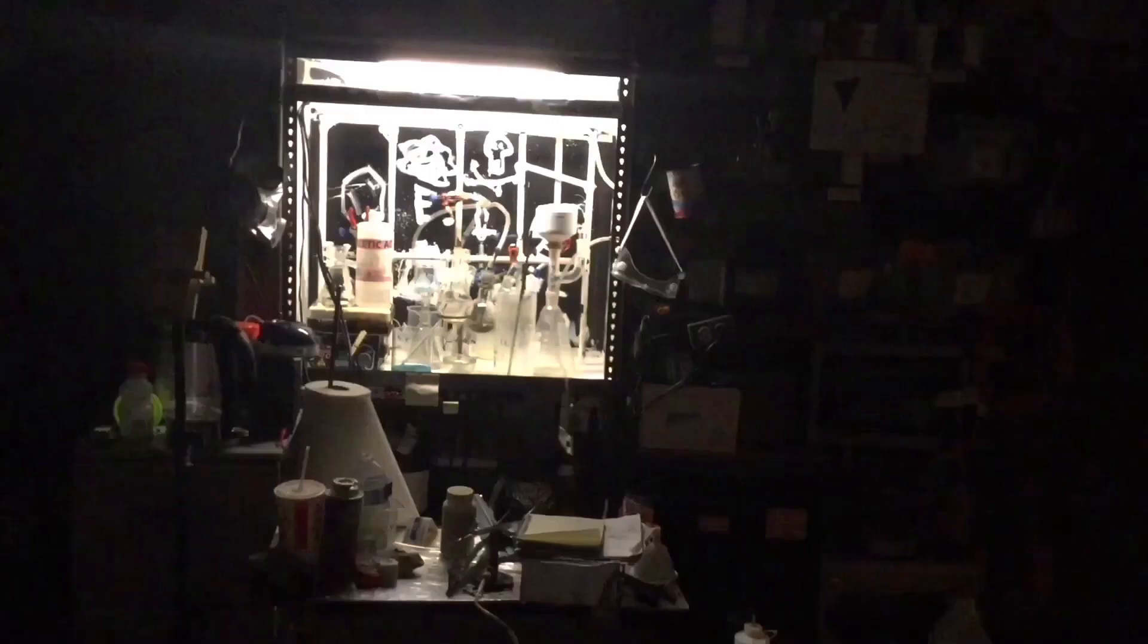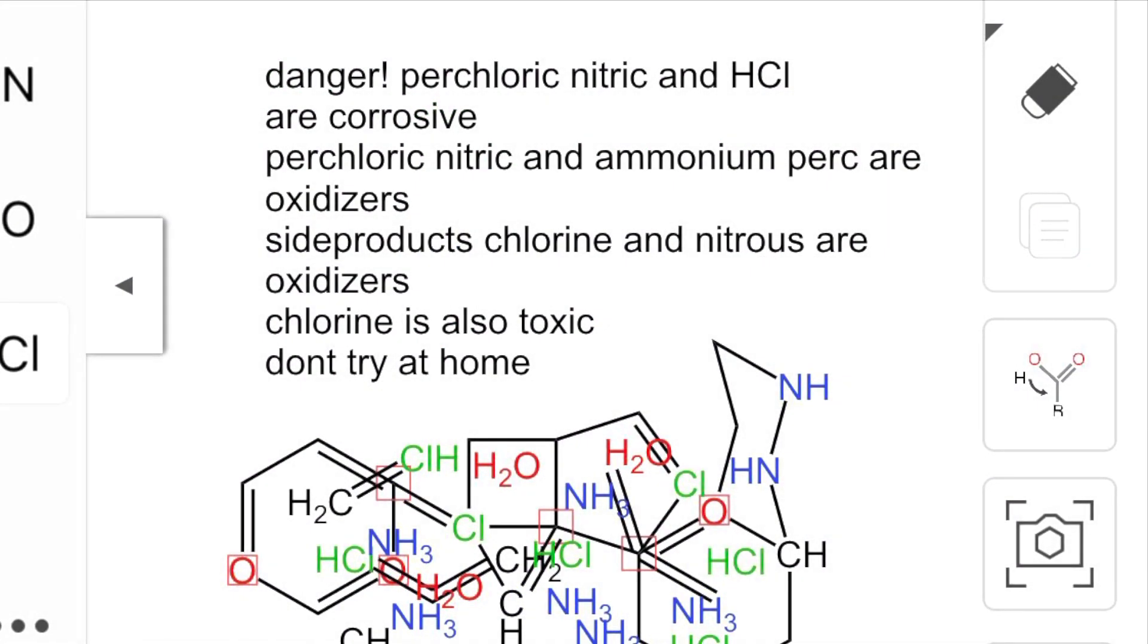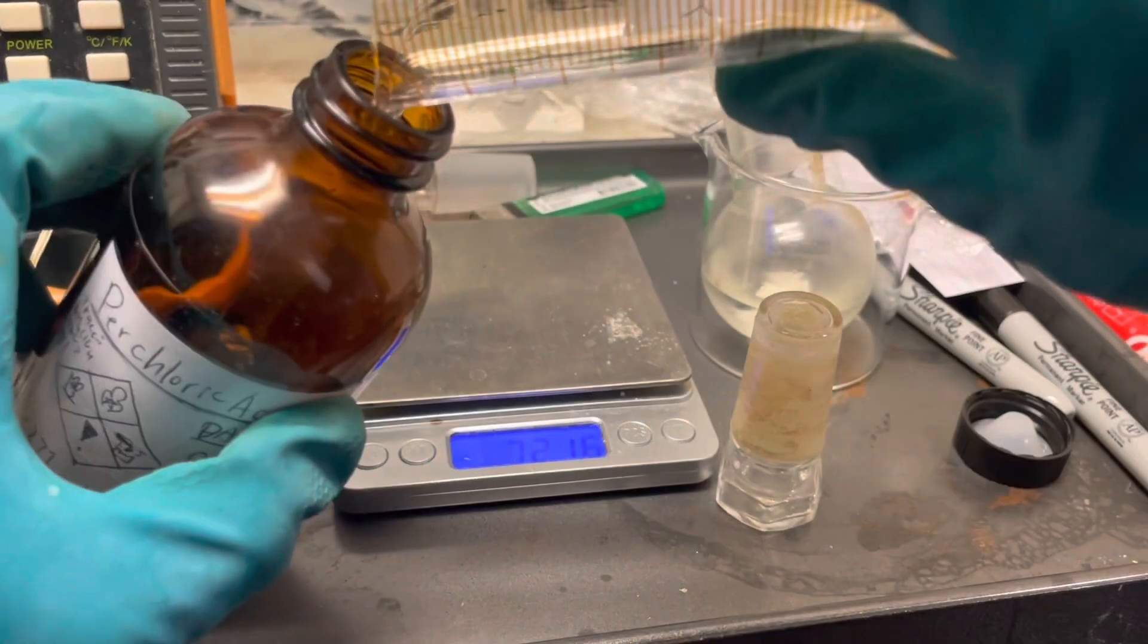It's all so good. It's a lot of dark white. Warning: nitric acid, perchloric acid are corrosive and oxidizing, the latter being crazily so. Ammonium perchlorate is oxidizing, hydrochloric acid is corrosive, the side product chlorine is toxic, and nitrous is oxidizing. Do not try at home. Welcome back matter manipulator.